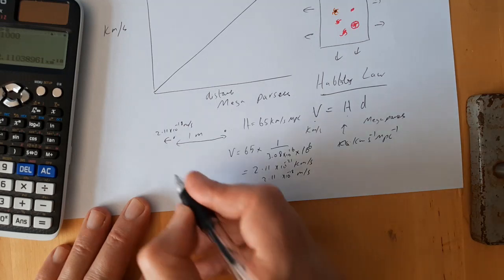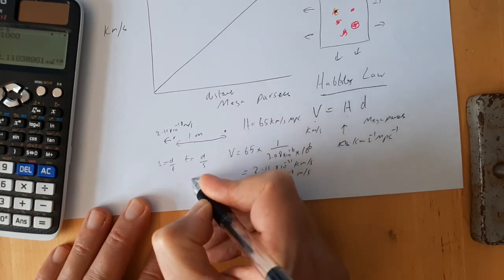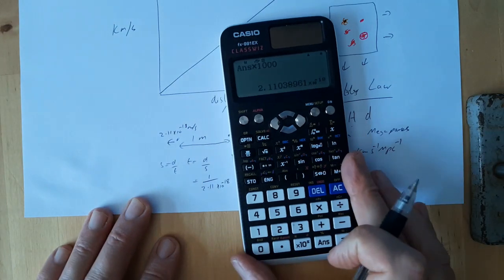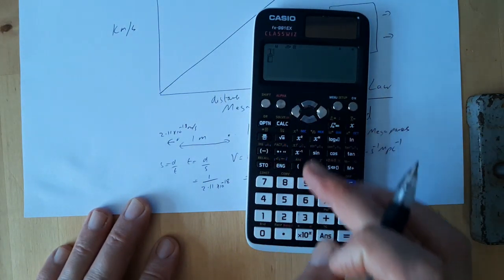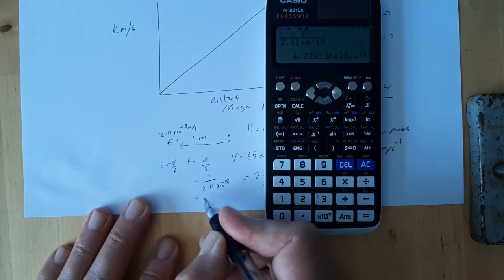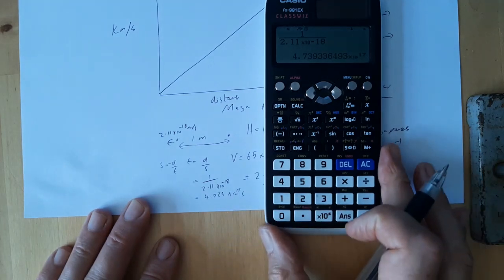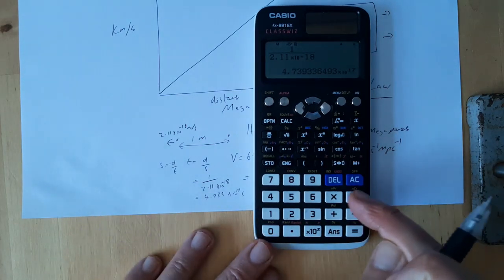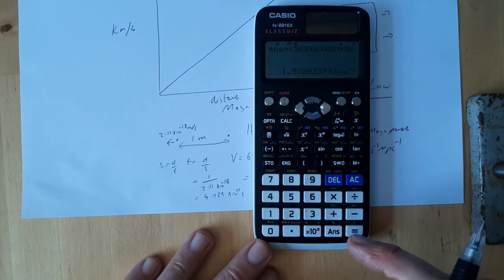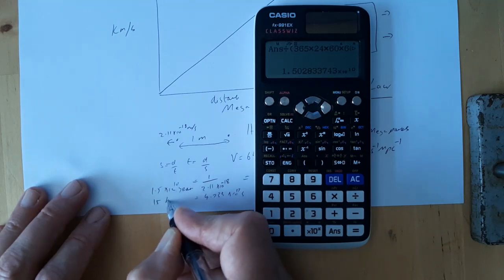So we can now find the age of the universe because we know that speed equals distance over time. So time is equal to distance over speed. There's a distance of one meter over 2.11 times 10 to the minus 18, which gives us an age of the universe of 4.739 times 10 to the 17 seconds. That's a bit meaningless, so let's quickly convert that into years. So let's divide that by 365 times 24 times 60 times 60, and that gives an age of the universe of 1.5 times 10 to the 10 years, which is 15 billion years.